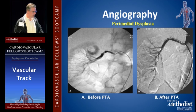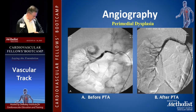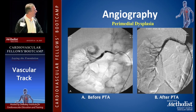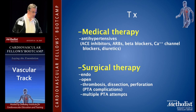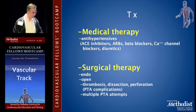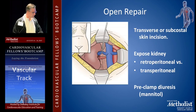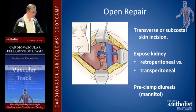This is another example of perimedial dysplasia — a little more focal — showing narrowing before and after angioplasty. Angioplasty is the go-to treatment. Open surgical therapy is generally reserved for angioplasty complications such as thrombosis, dissection, or perforation, or for multiple angioplasty attempts with recurrences. Open repair is generally for failure of endovascular therapy, often using a transverse or subcostal skin incision.